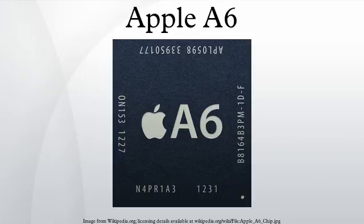The Apple A6 is a 32-bit package-on-package system on a chip designed by Apple Incorporated, introduced on September 12, 2012 at the launch of the iPhone 5. Apple states that it is up to twice as fast and has up to twice the graphics power compared to its predecessor, the Apple A5.